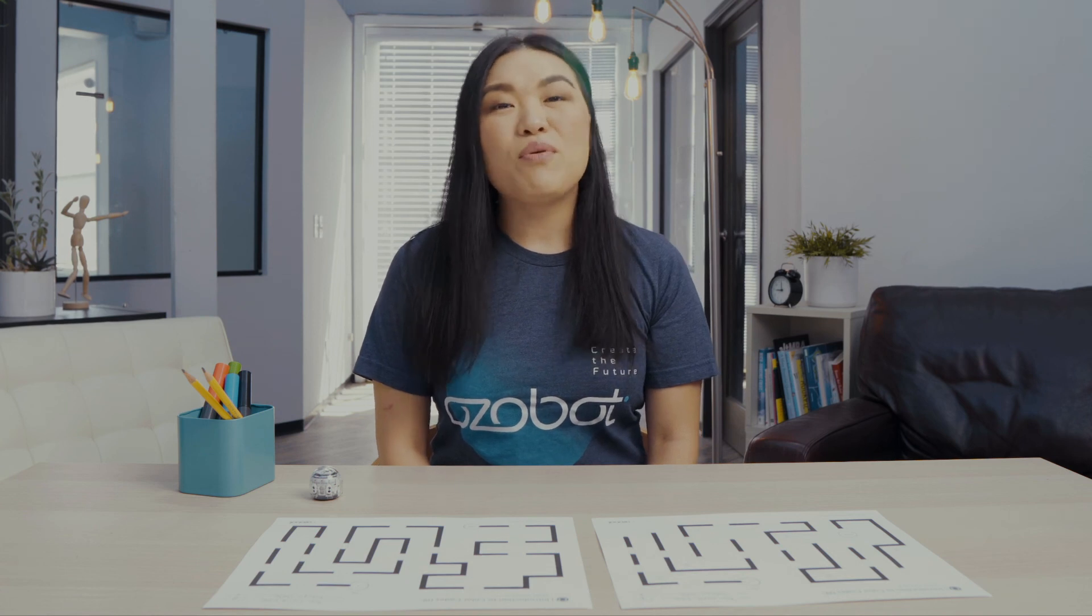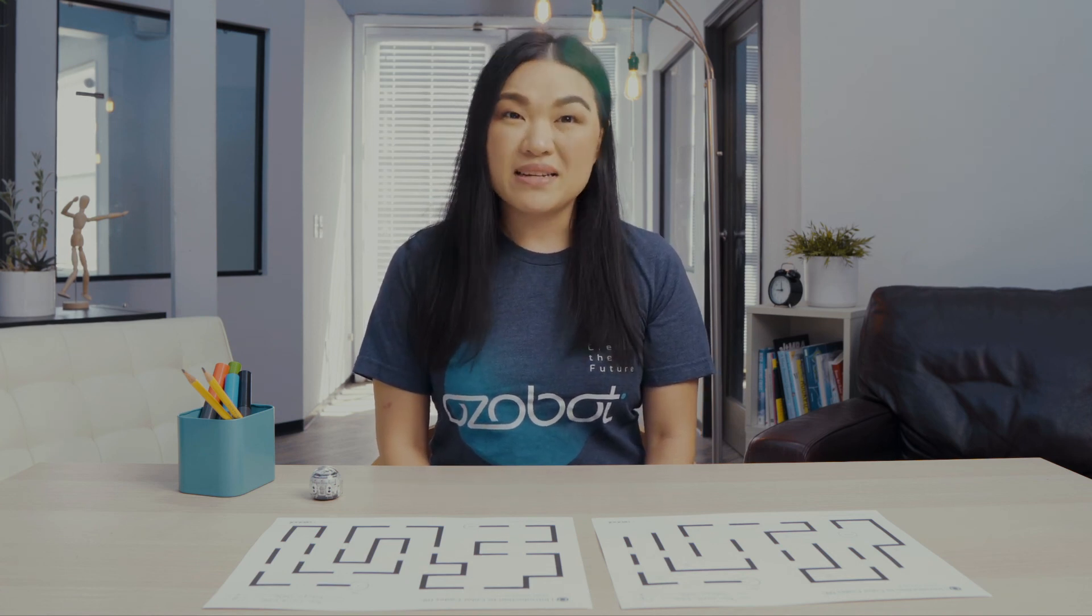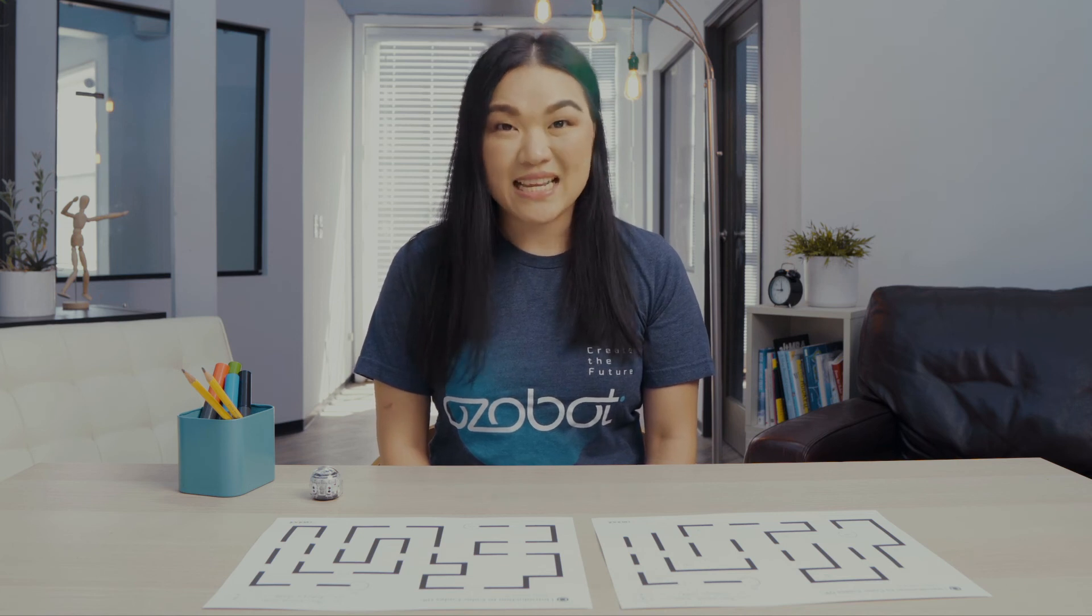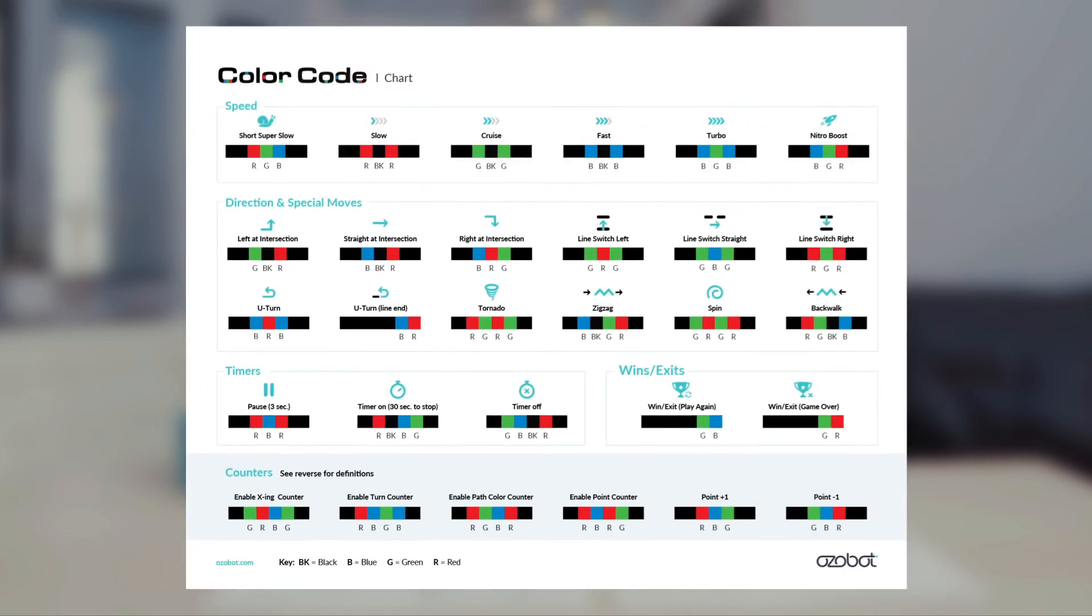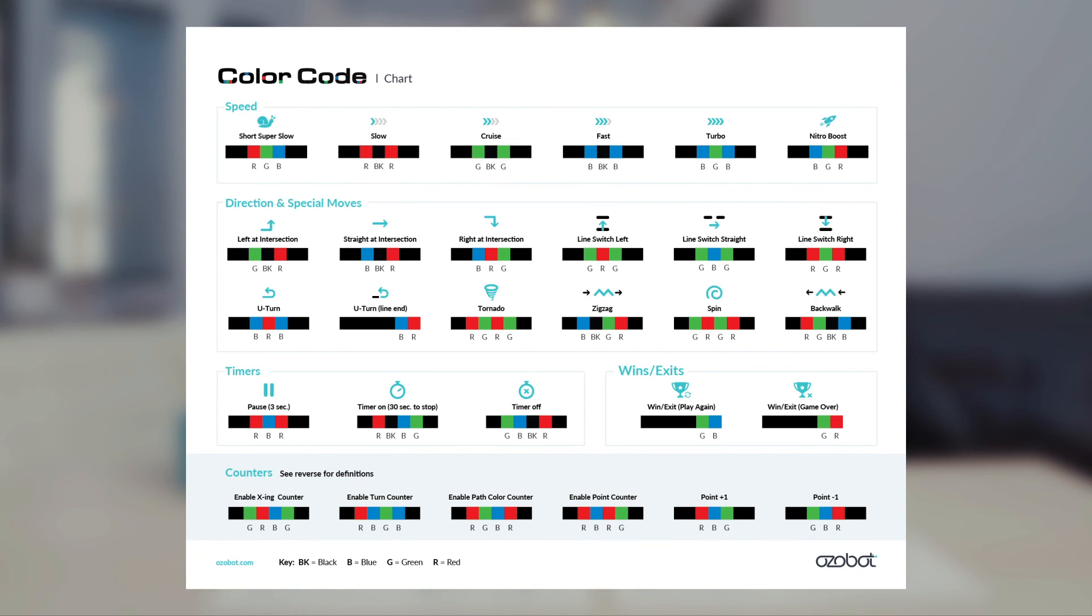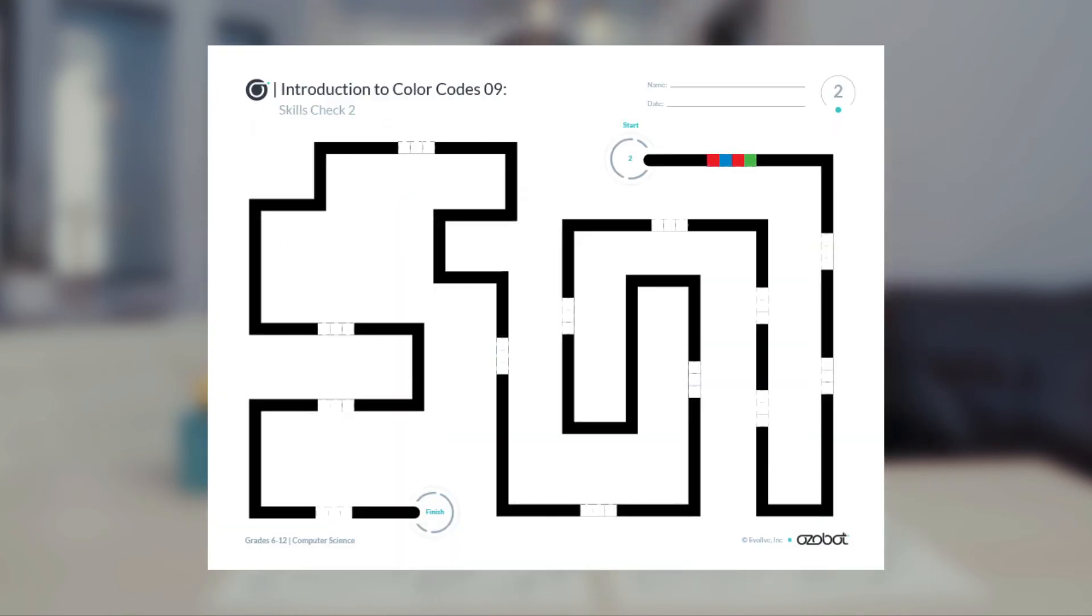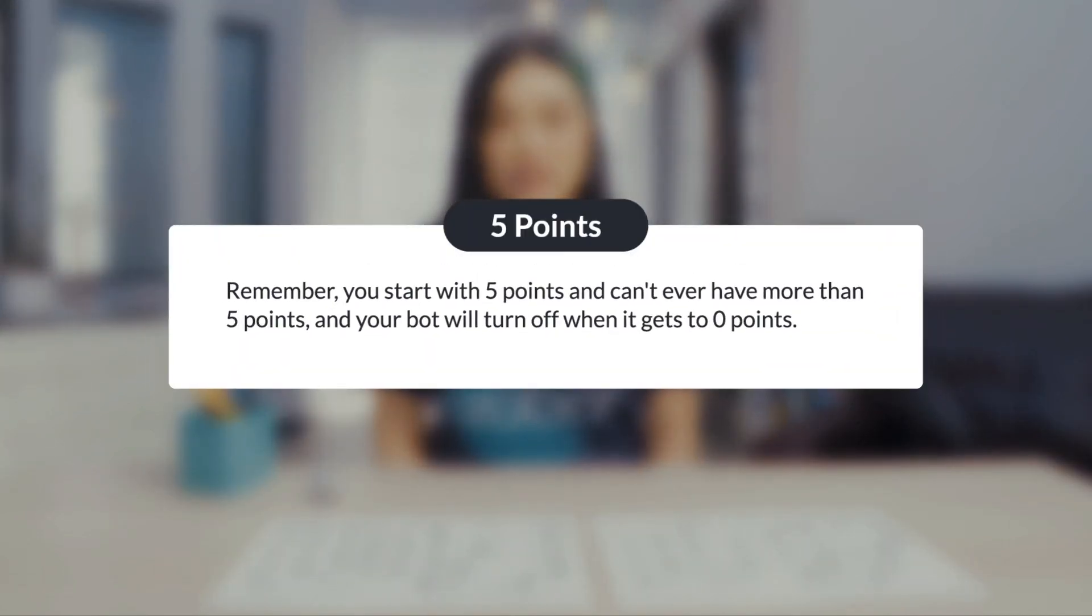You've learned about the point counter, point plus one, point minus one color codes in a previous lesson. Look at the second page of your activity sheets to find another counter challenge. Refer to your color codes chart and add the point counter color code in the first color code space of the maze. Take a minute to plan the order of the point plus one and point minus one codes so that the last code subtracts the final point from the total and you have zero points left. Remember, you start with five points and can't ever have more than five points and your bot will turn off when it gets to zero points.